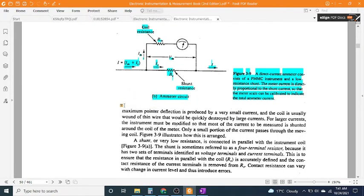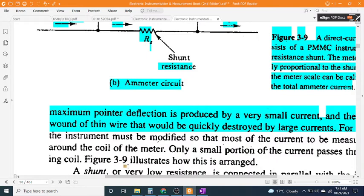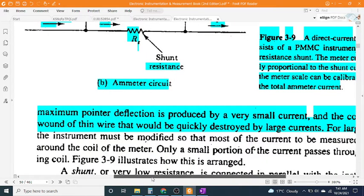Maximum pointer deflection is produced by a very small current, and the coil is usually wound of thin wire that would be quickly destroyed by large currents.